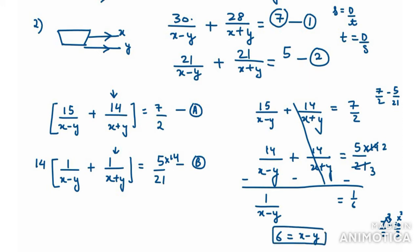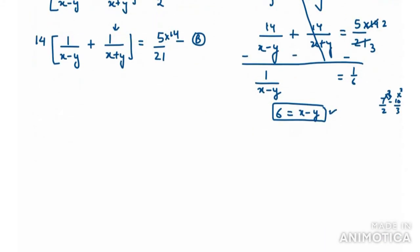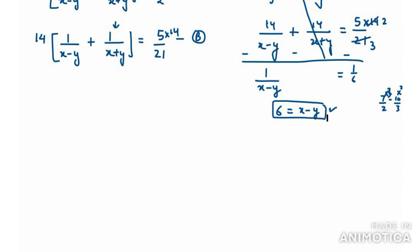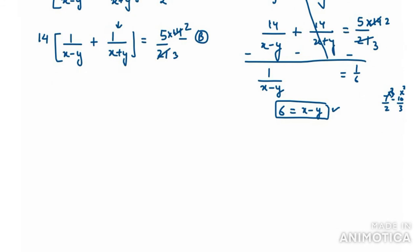We can use this value in equation 1 or equation 2. I prefer equation B because it looks simpler. Putting this value in equation B: 1 over x minus y plus 1 over x plus y equals 5 over 21. Substituting x minus y as 6, we get 1 over 6 plus 1 over x plus y equals 5 over 21.